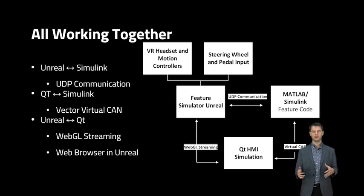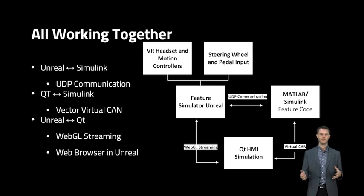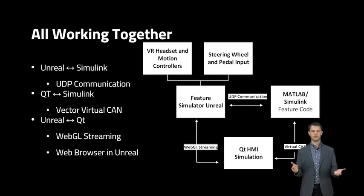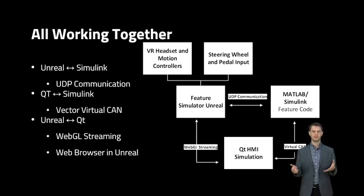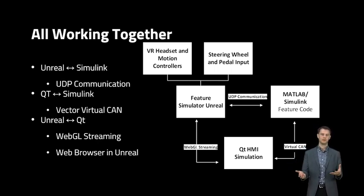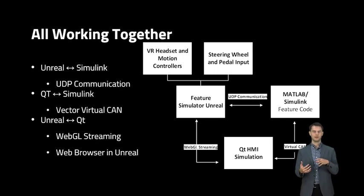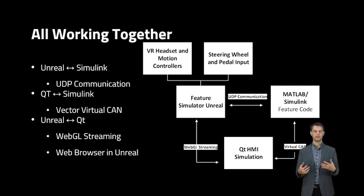This is the architecture I developed, though other communication methods are possible. Between Unreal and MATLAB and Simulink, I used UDP communication — for example, in Unreal you have vehicle speed and that gets sent back to your MATLAB controls model so you can update your vehicle state, then you send information back to Unreal to update your visualization. The communication between Qt and MATLAB and Simulink was through CAN — using Qt CAN bus, I was able to integrate into the production communication interfaces, and you can run this on a computer using virtual CAN. The key piece was bringing Qt into Unreal, and I did this using WebGL streaming, inspired by a Qt tech demo showing Qt brought into Autodesk Vred using the same method.